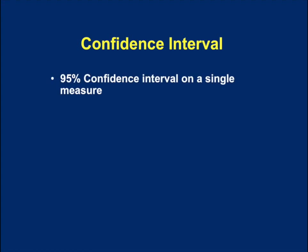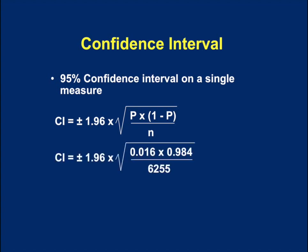A 95% confidence interval gives us the 95% probability range for that figure. It's probably best thought of as: if you were to repeat this study 100 times, 95 of the results would fall within that range. You can calculate this using a calculator or back of the envelope, but if you do an internet search for 'confidence interval calculator', you can find a webpage that will do this calculation for you. Entering the figures gives us a value of plus or minus 0.31% on our 1.6%.